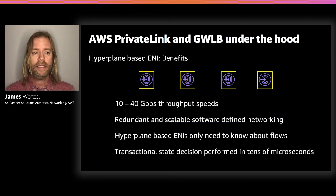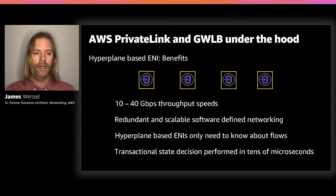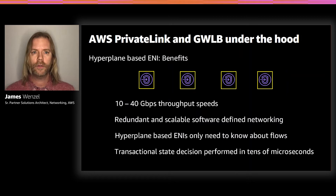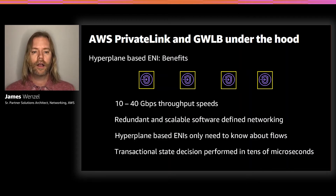This means you can have up to 40 gigabits throughput speed for every ENI you put in place. They're also redundant and scalable because they are software-defined. The hyperplane-based ENIs only need to know about flows — they're on top of the VPC infrastructure, not on layer two. Because they only deal with flows, transactional state decisions are anywhere around tens of microseconds.